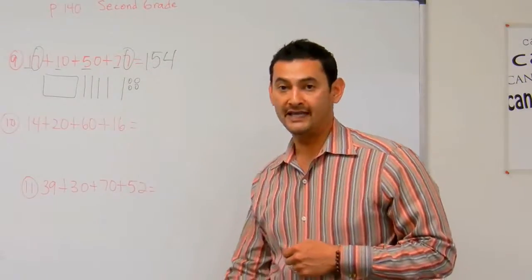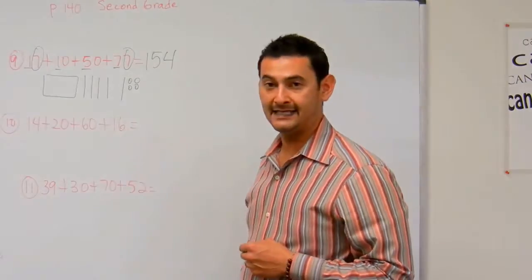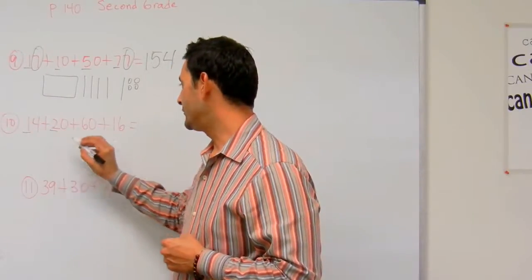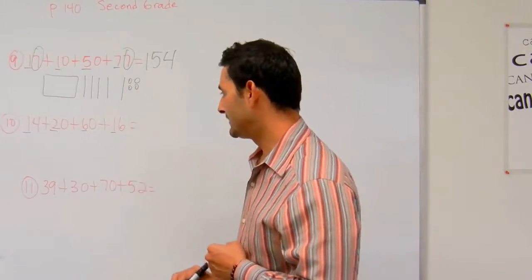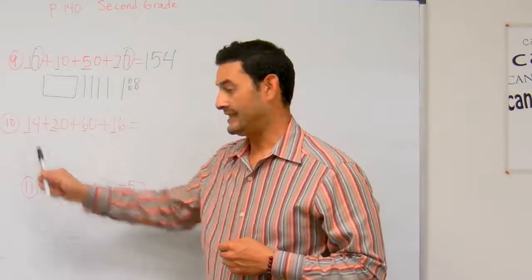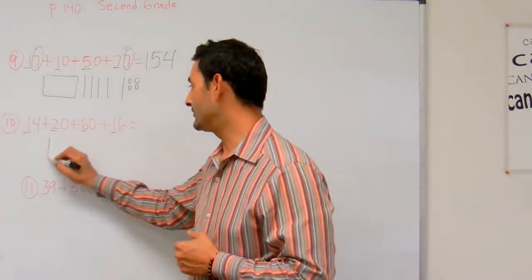Now let's take a look at number 10. Here I've got 14 plus 20 plus 60 plus 16. Let's go ahead and let's start with the tens. I've got a 1 there, 2 bundles of 10, 6 bundles of 10, and 1 bundle of 10. So I have 6, 7, 8, 9, 10. I've got 10 bundles of 10, which is 100. So I'm going to draw a 100 block.